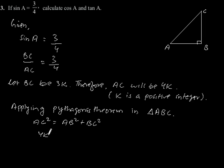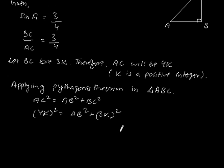AC is 4K, so 4K square is equal to AB square plus 3K square. This gives 16K square is equal to AB square plus 9K square.